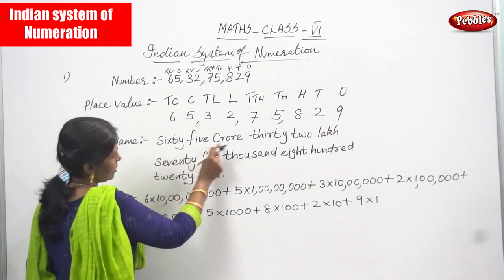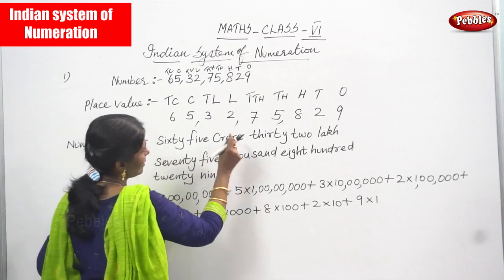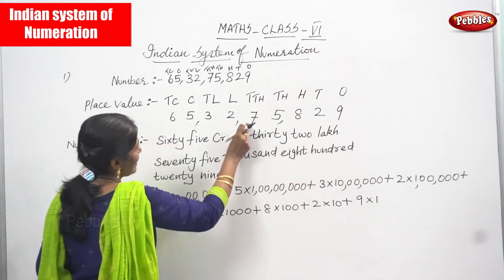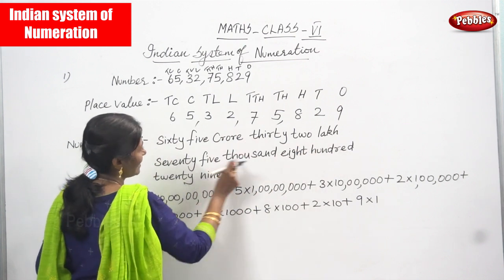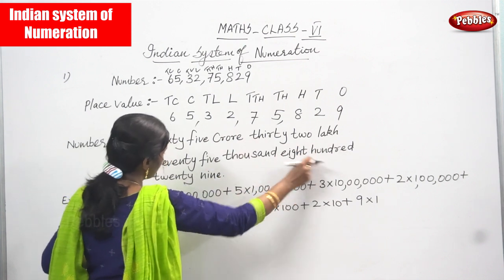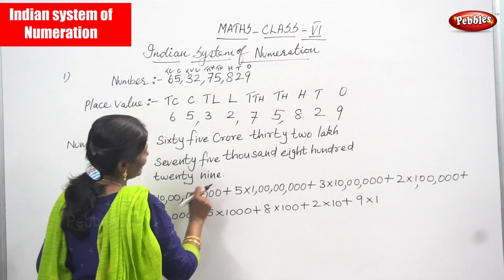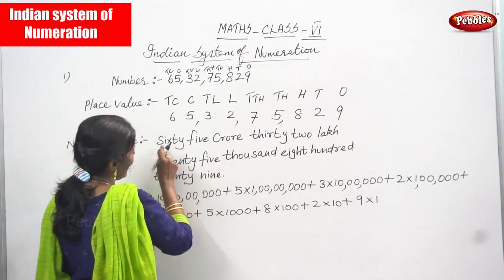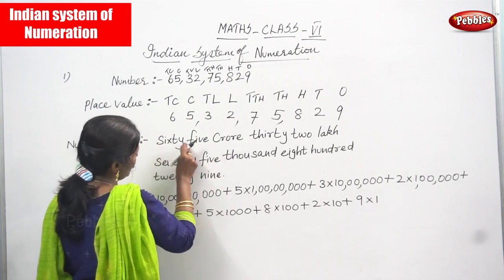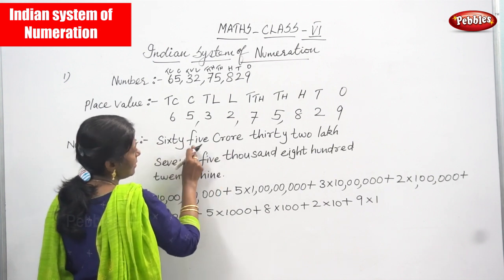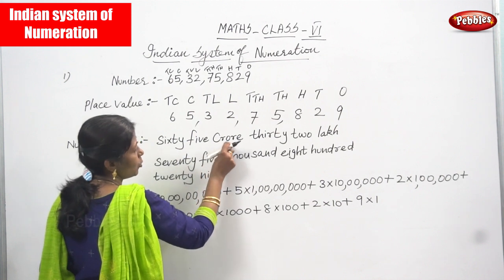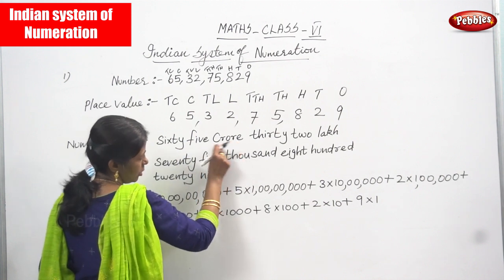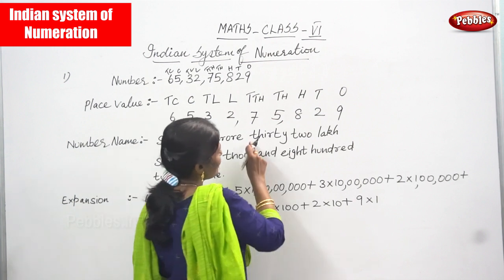The number name is: sixty five crores thirty two lakhs seventy five thousand eight hundred twenty nine. Spelling: sixty — S I X T Y, 5 — F I V E, crores — C R O R E, and thirty two lakhs — T H I R T Y, 3 0, T W O, 2, L A K H S.